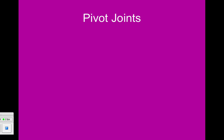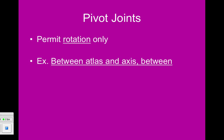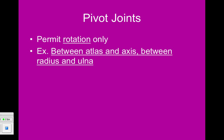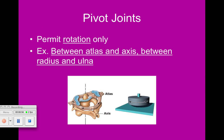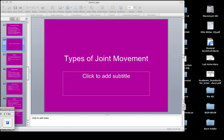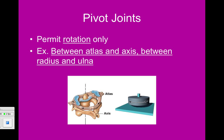Pivot joints are ones that permit rotation only. If a joint rotates only, it is a pivot joint. Examples include between the atlas and axis in the neck, and between the radius and ulna in the elbow. When you twist your wrist, you're actually twisting your radius and your ulna.